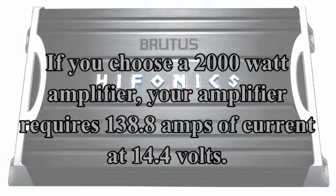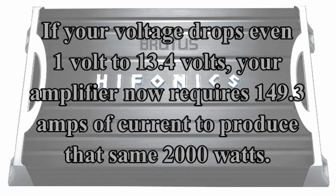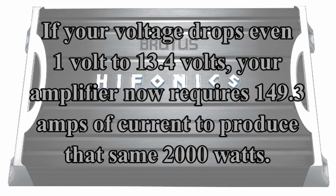For this example, we'll assume that you have a 2000 watt amplifier and that your amplifier requires 138.8 amps of current at 14.4 volts. We figure this by taking 2000 watts divided by 14.4 volts equals 138 amps. Now, if your voltage drops 1 volt to 13.4 volts, your amplifier now requires 149.3 amps to produce that same 2000 watts. We figure this by 2000 watts divided by 13.4 volts equals 149.3 amps.